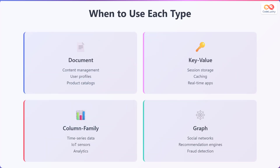Let's compare the use cases for each type of NoSQL database. Document databases are suitable for content management, user profiles, and product catalogs. Key value databases are ideal for session storage, caching, and real-time applications. Column family databases are well suited for time series data, Internet of Things sensors, and analytics. Graph databases are used for social networks, recommendation engines, and fraud detection.